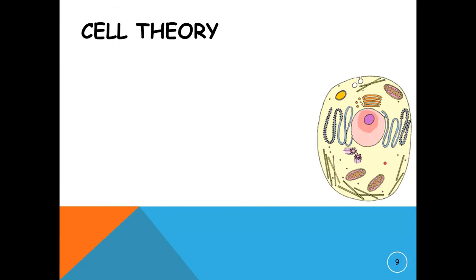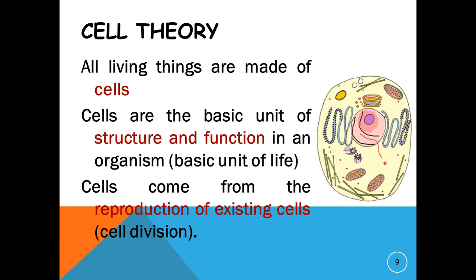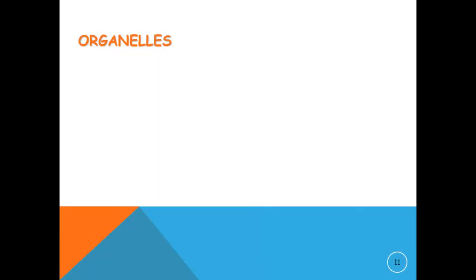So what we came to know from the cell theory: all living things are made up of cells, cells are the basic unit of structure and function in an organism, that is the basic unit of life, and cells come from the reproduction of existing cells.